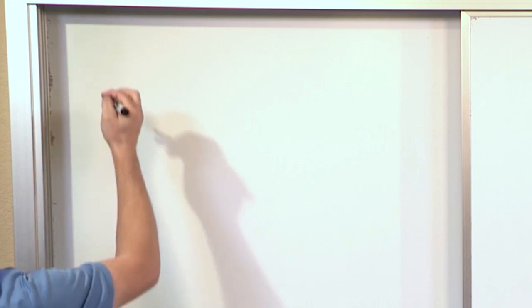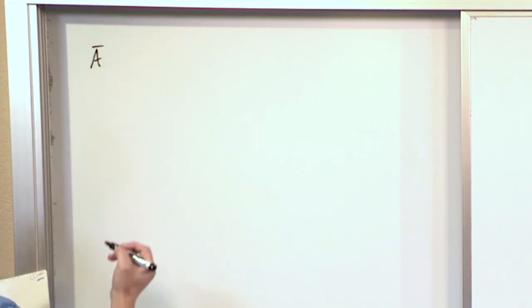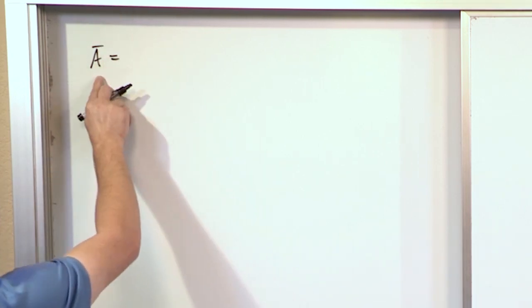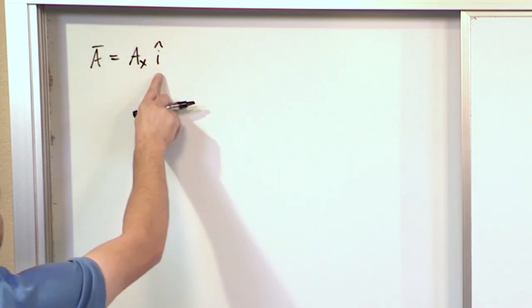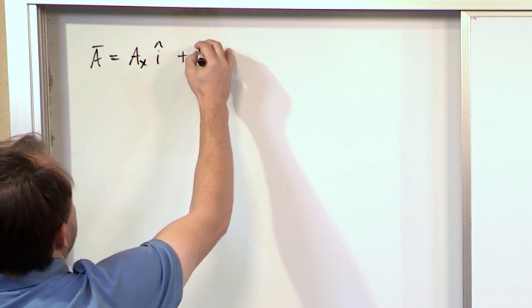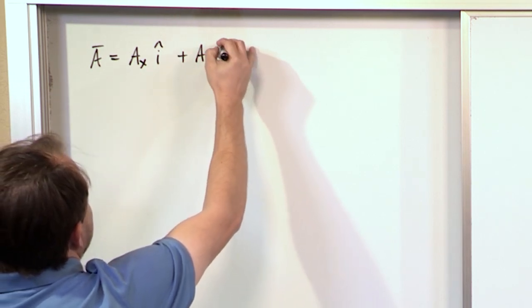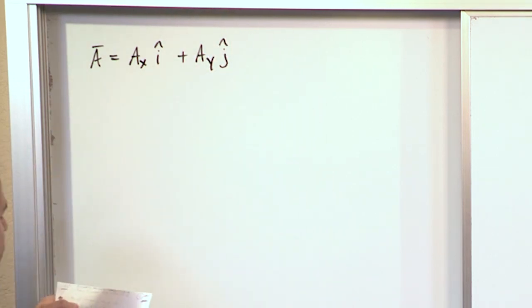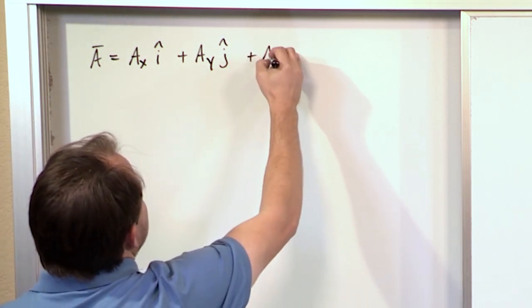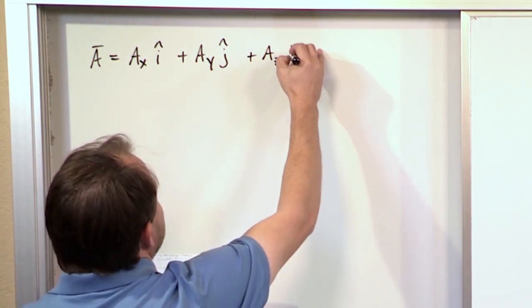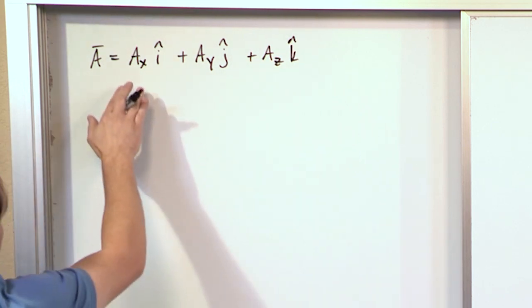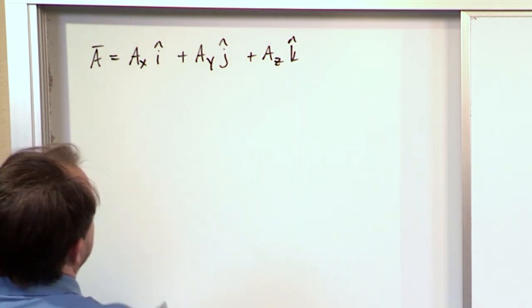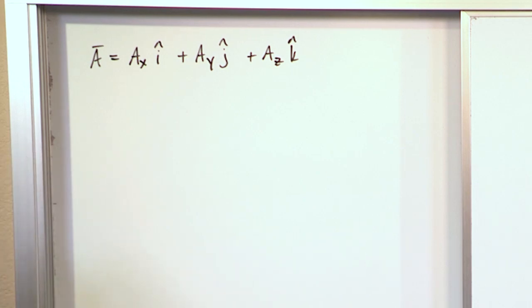I want you to recall something we've talked about before. Any vector A can be written as an X component of A in the i direction, plus some Y component of A in the j direction, which is a unit vector in the Y direction, plus some Z component of A in the k direction. This is stuff we've covered many times before. You should be very comfortable with the fact that X, Y, Z is a three-dimensional representation of any vector.